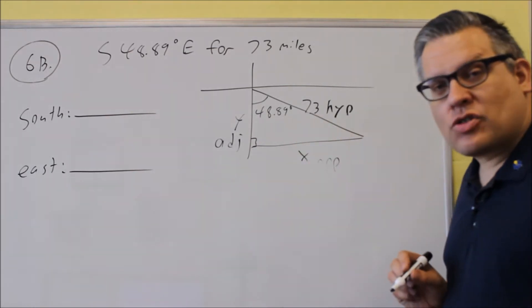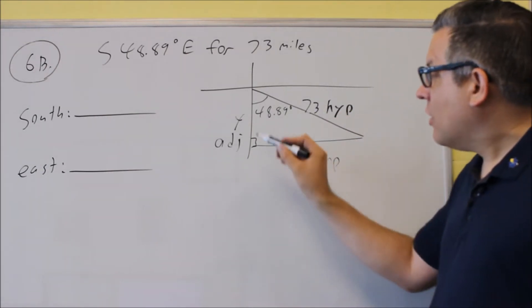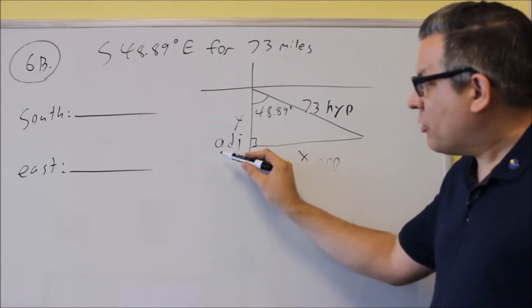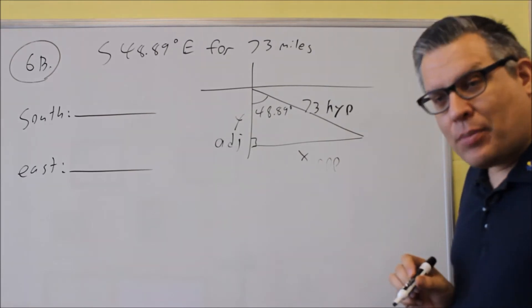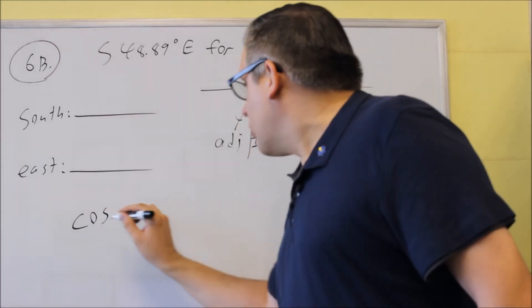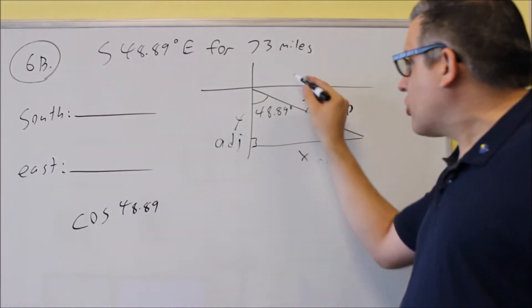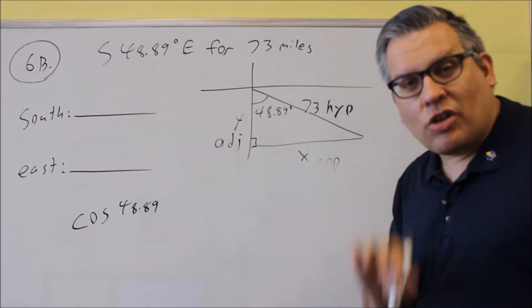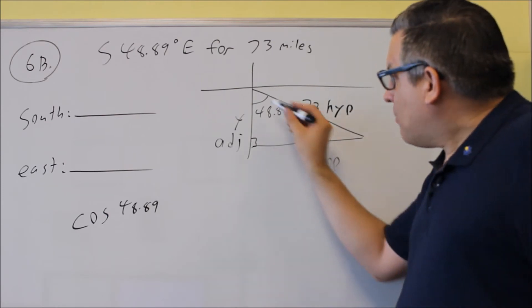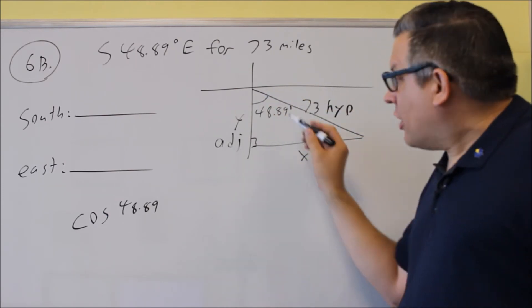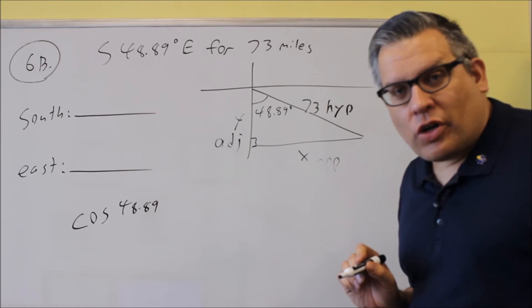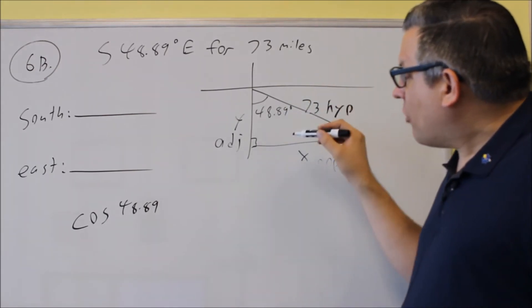If we want to solve for y, the trig function I'm going to use would be, I'm picking a trig function that relates adjacent and hypotenuse. That's going to be cosine. So we're going to do cosine of 48.89 degrees. Now we don't have to subtract from 90 like we did in the previous problem, because we're able to fit the triangle here, and the angle is already inside the triangle. So we don't have to worry about subtracting it from it.